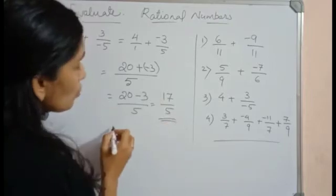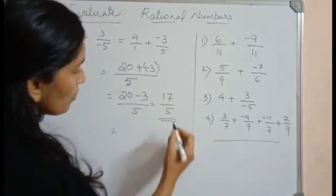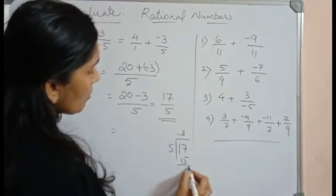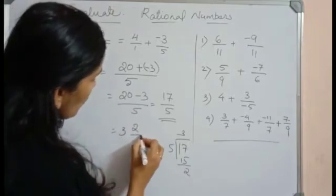We can convert this into mixed fraction. How to convert into mixed fraction? Just you have to do normal division. 5 3's are 15. The remainder is 2. So your answer will be 3 2/5.